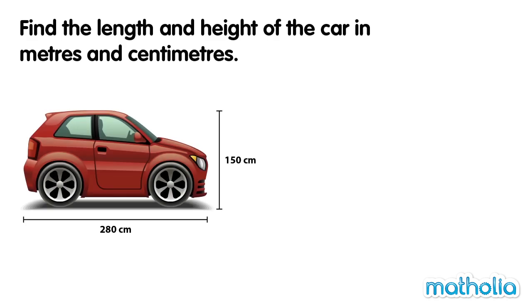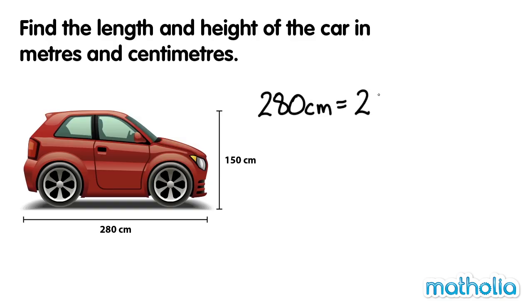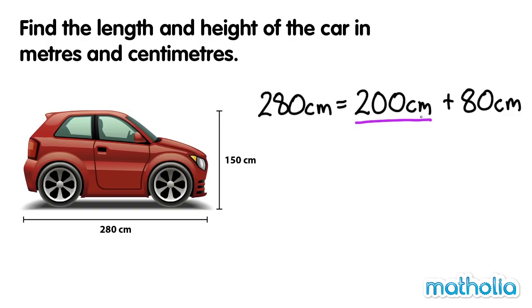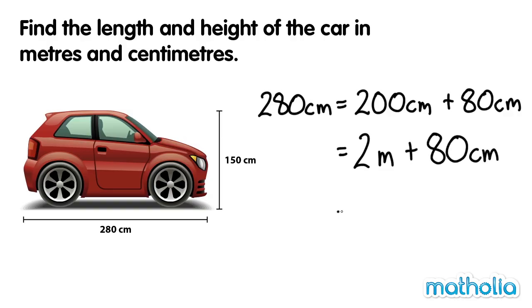The length of the car is two hundred and eighty centimetres. We can write two hundred and eighty centimetres equals two hundred centimetres plus eighty centimetres. So two hundred and eighty centimetres equals two metres plus eighty centimetres. So 280 centimetres equals 2 metres 80 centimetres. The length of the car is 2 metres 80 centimetres.